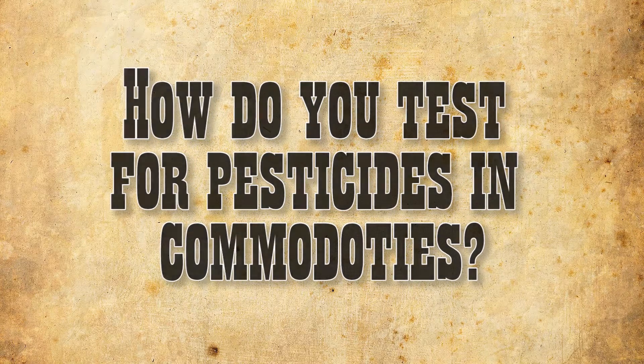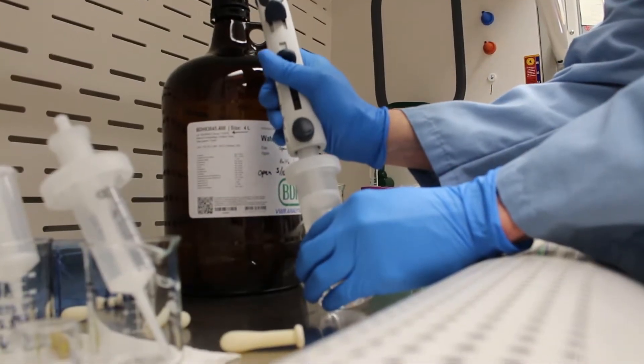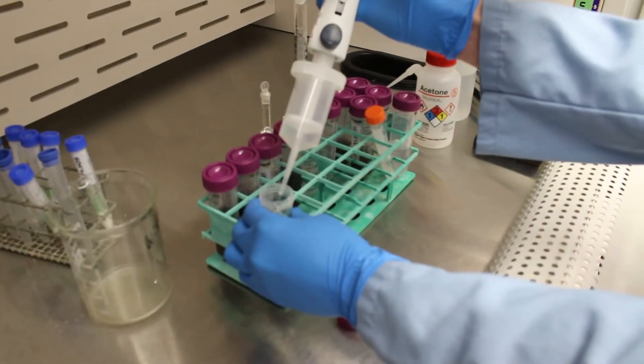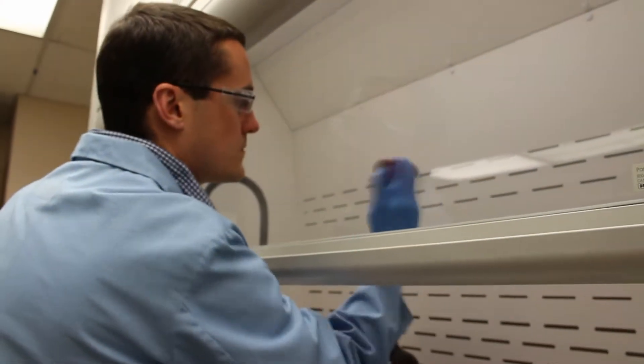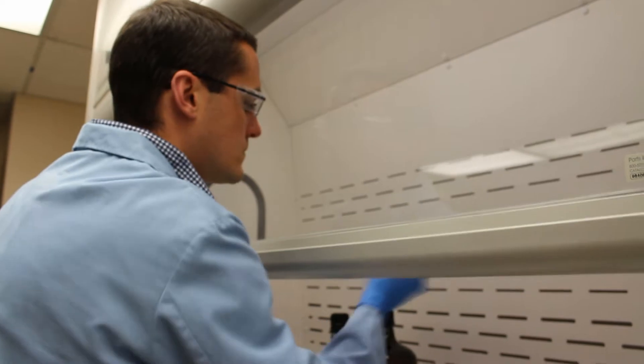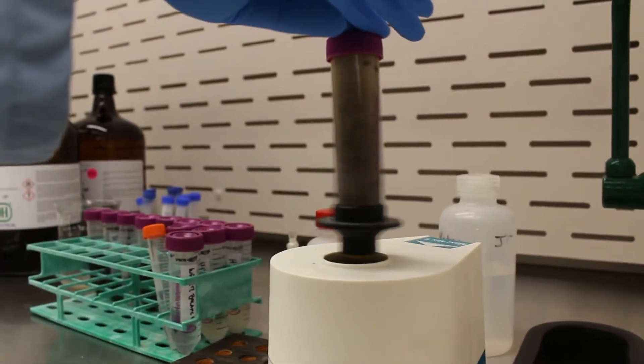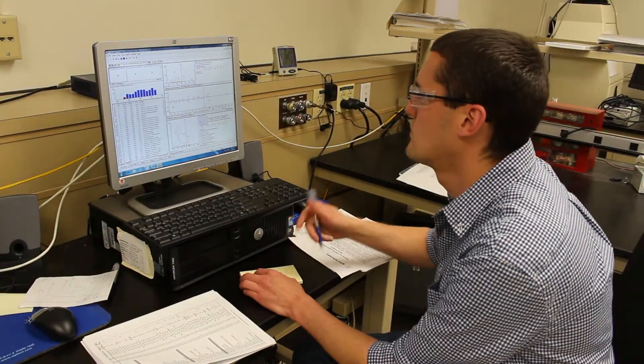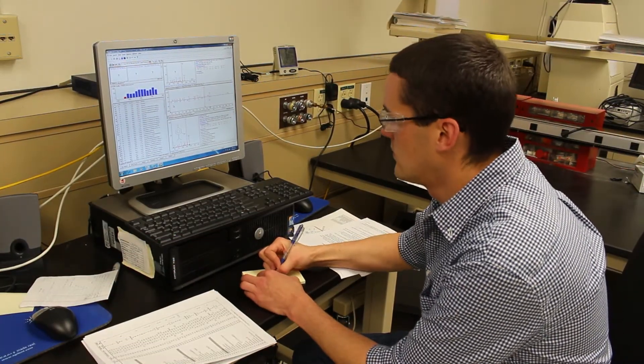Samples are brought to us mostly by inspectors or by the customers, and we analyze them for pesticides. We look for a type of pesticide or a certain compound that they want us to look for, or if not, we'll do general screenings of any commodities or milks. We look for any organochlorines, organophosphates, herbicides, pesticides, whatever pesticides we're looking for.